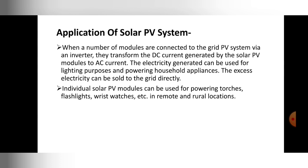The electricity generated can be used for lighting purposes and powering household appliances. The AC current generated by the modules will be used for lighting or household purposes. The excess electricity can also be sold directly to the grid or to different industries for powering purposes.